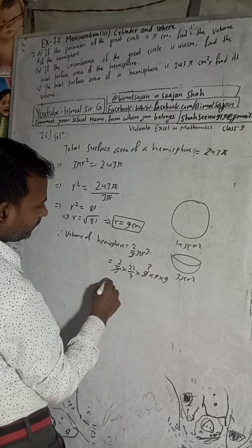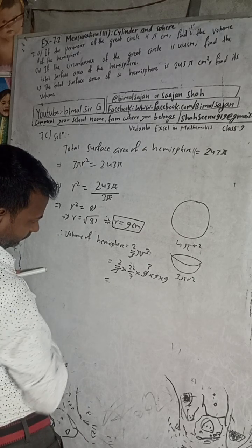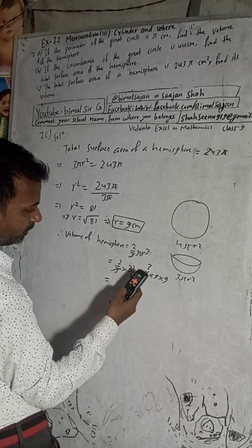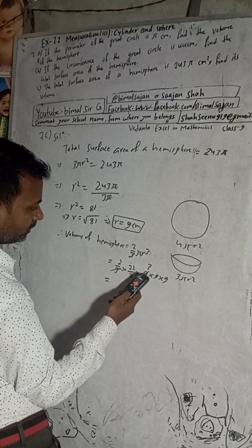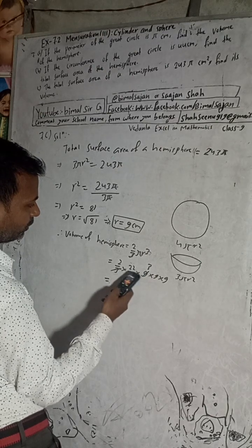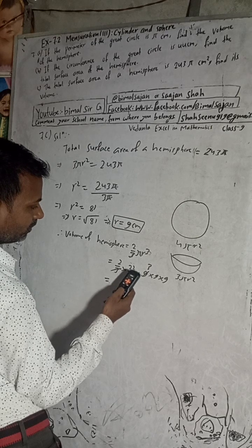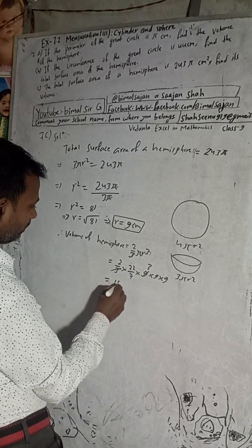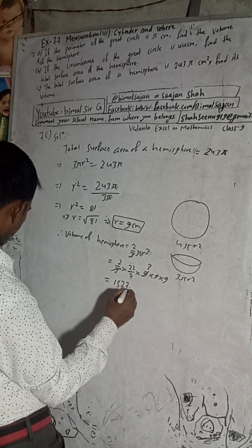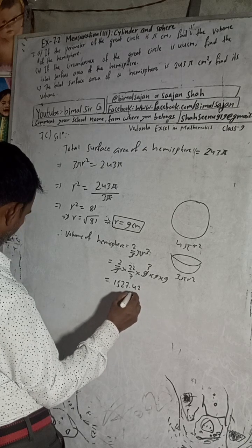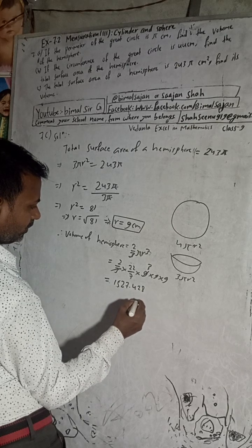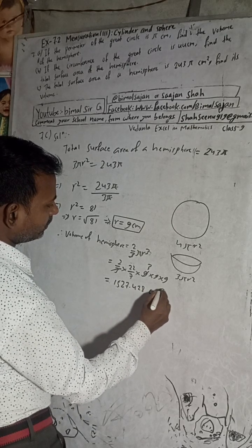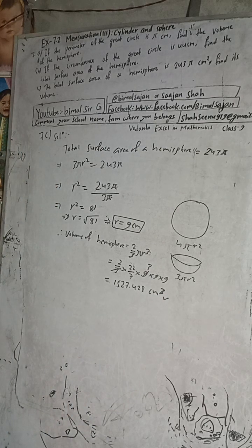Calculating: 9 × 9 × 9 gives 729, then multiplying by 22 and 2, dividing by 7 × 3, we get 1527.428 cm cubed. So this is the required solution of this question. The answer given in the book is 1527.43.